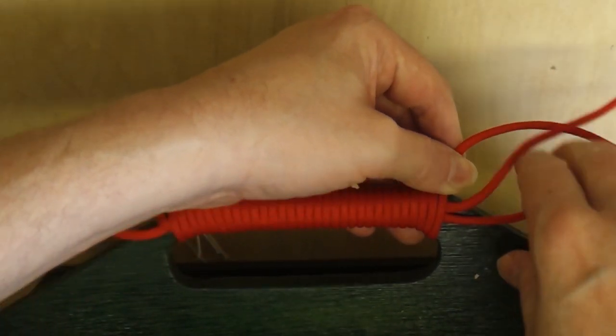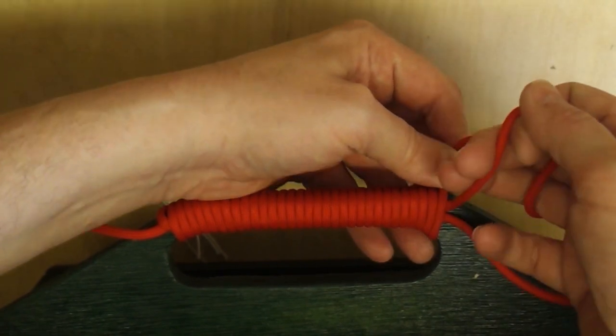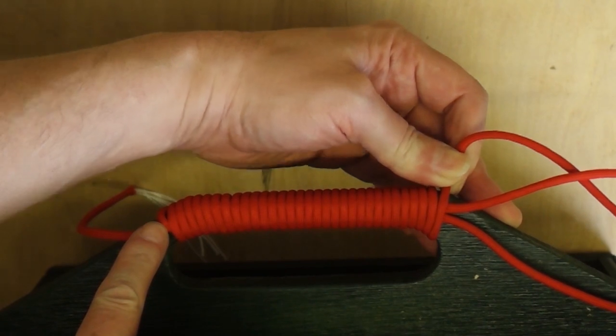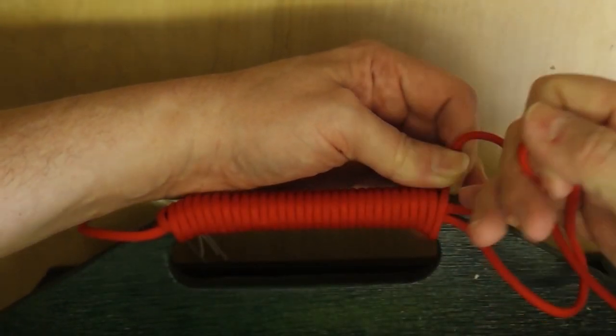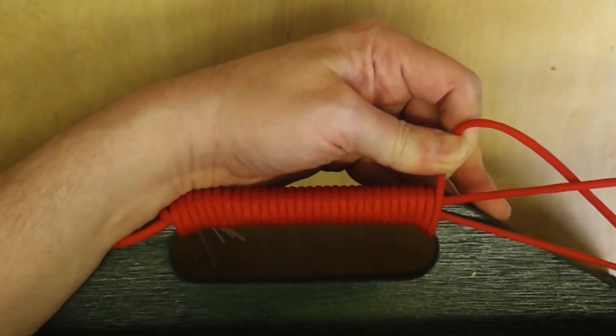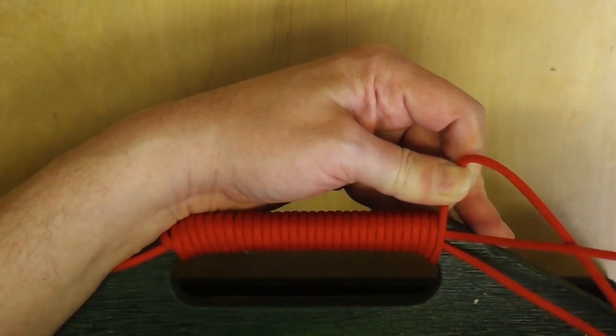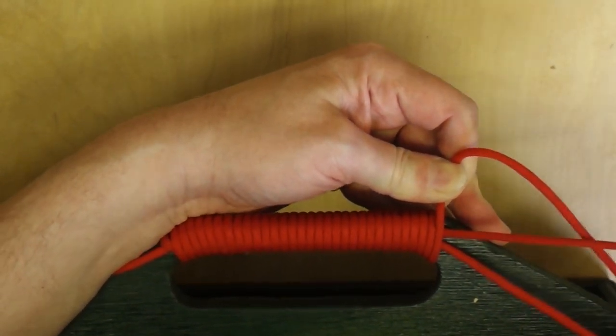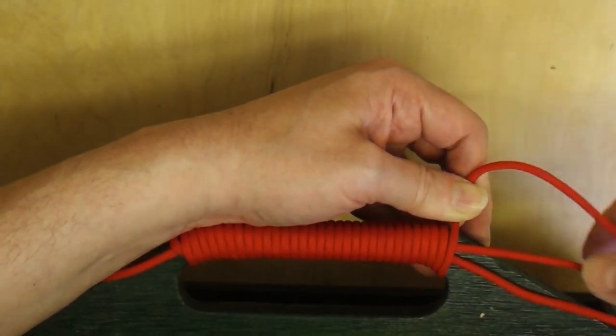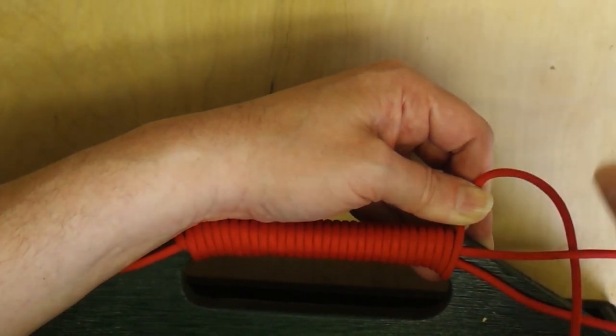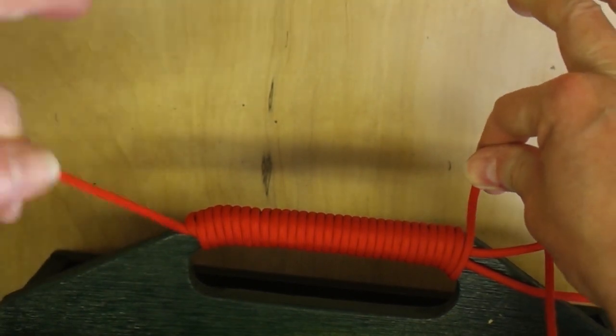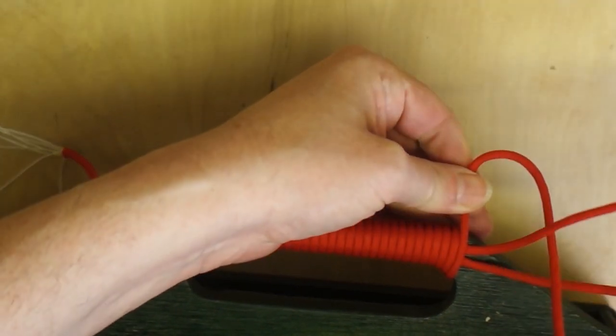Right, now we need to pull. So we need to pull this end, which is where the first wrap went over, we've got to pull that tight. So we need to pull, oh that's pretty tight anyway actually. Like that, pull that tight, and then we need to pull this loop tight. Right, so we need to pull this end to pull the loop tight.